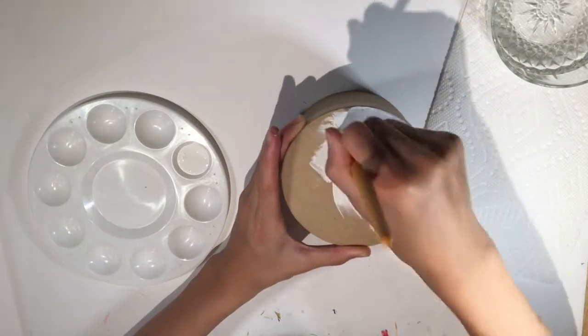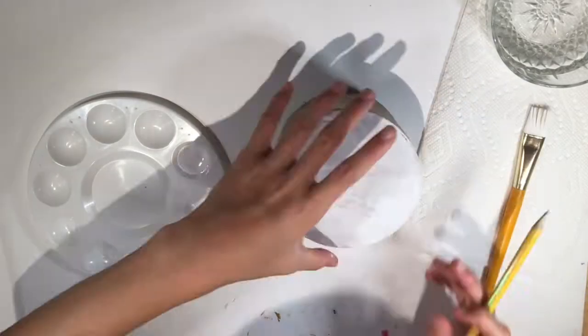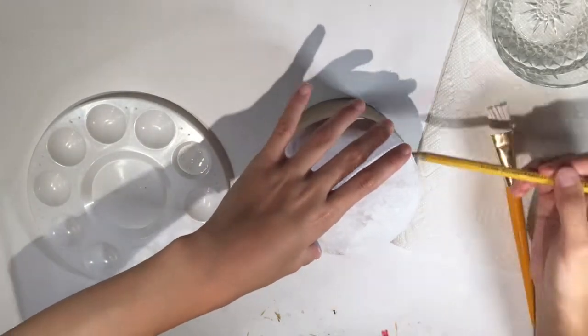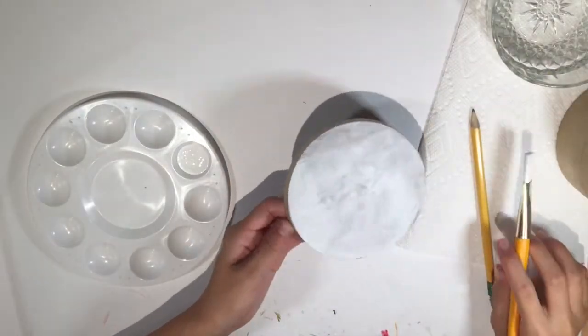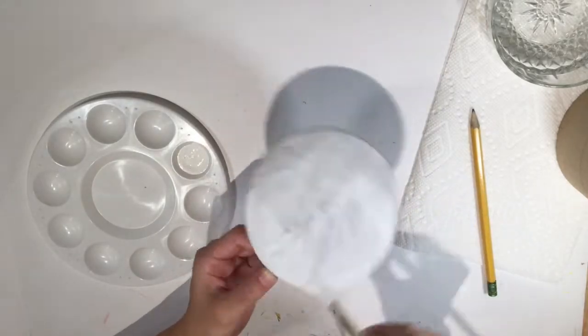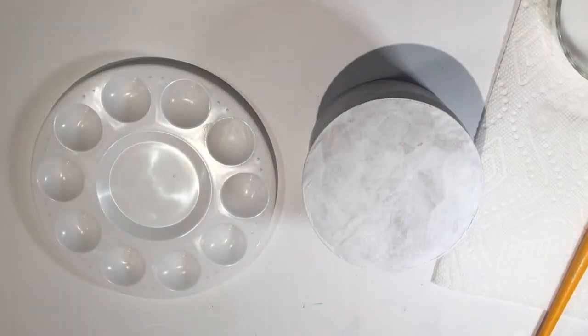Now you may notice I didn't gesso the place where the lid meets the bottom of the container just because I don't want paint there. I don't want paint there because that's where the lid opens and closes, and paint can sort of get in the way of that. But now to the actual painting.